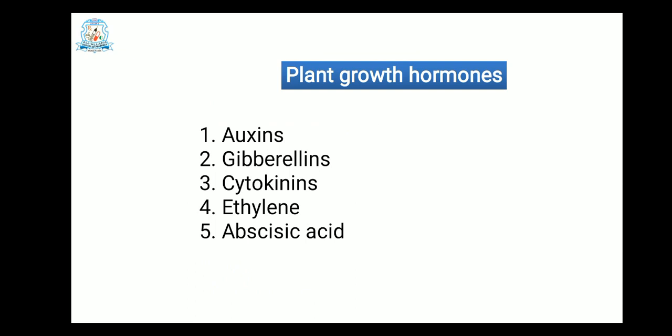There are five different plant growth hormones: first, auxins; second, gibberellins; third, cytokinins; fourth, ethylene; and last, abscisic acid. These are the five different plant growth hormones responsible for the development and growth of your plant.